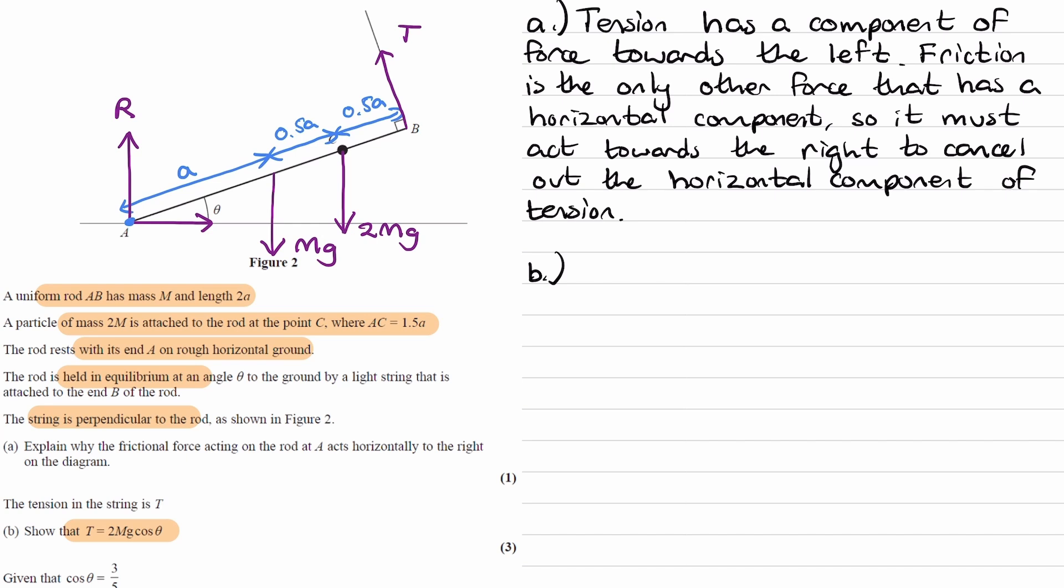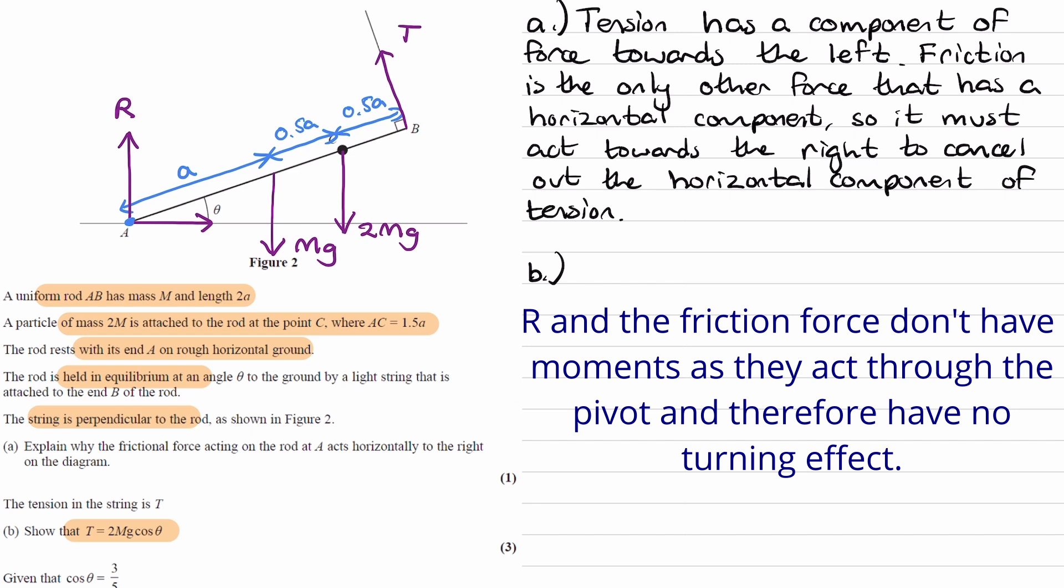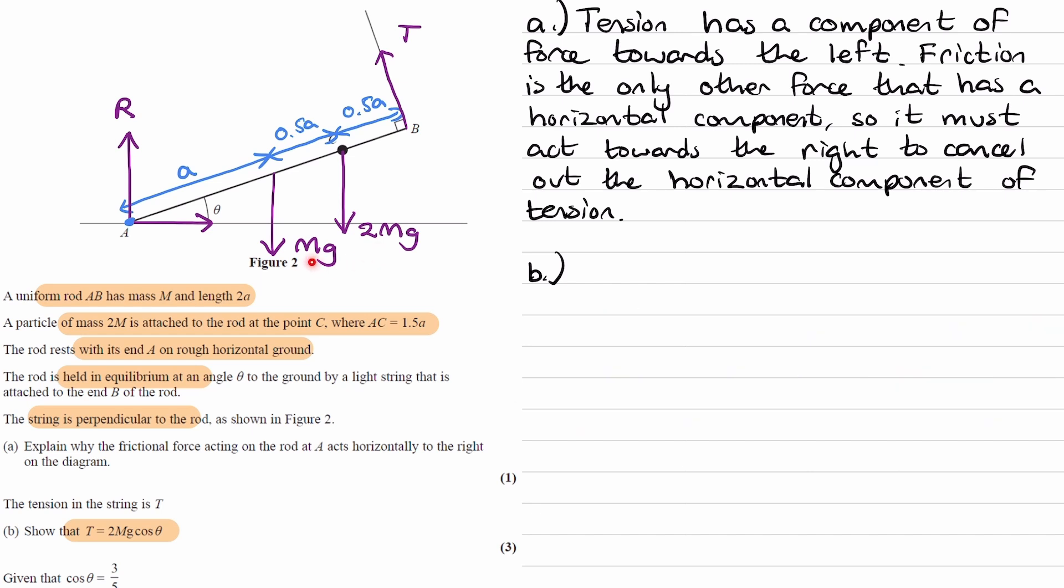Let's first identify which are the clockwise moments, which are the anticlockwise moments. The forces mg and 2mg, they will both have clockwise moments. If we start from where the force begins, follow along the arrow, and then go around the pivot, we see that we are going clockwise. Similarly, for the tension force, start where the force acts, follow along the arrow, go around the pivot, and we go anticlockwise. So the moments of these two forces added together would equal the moment of the tension force.